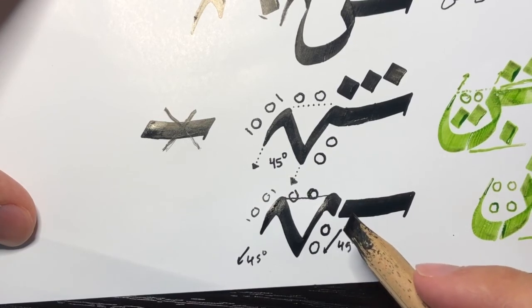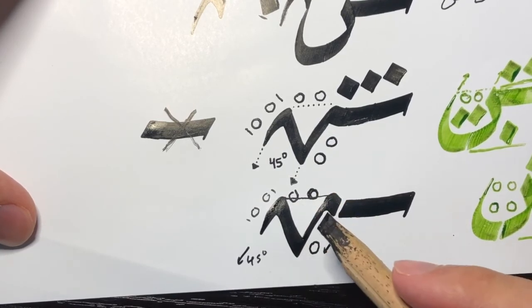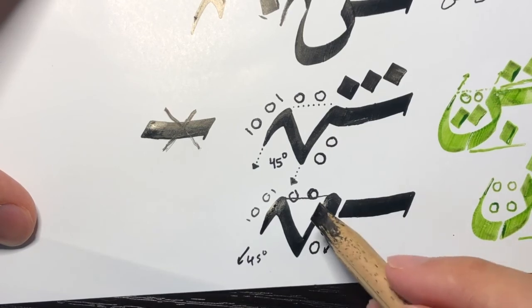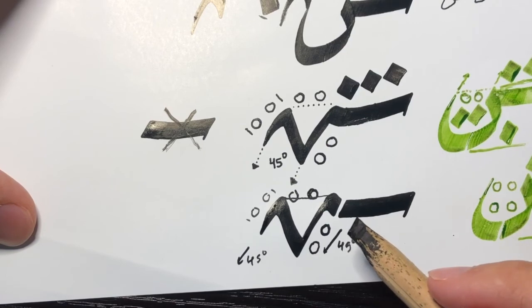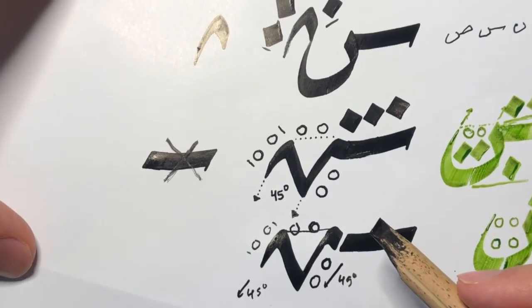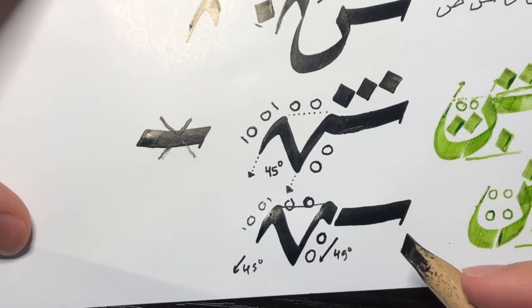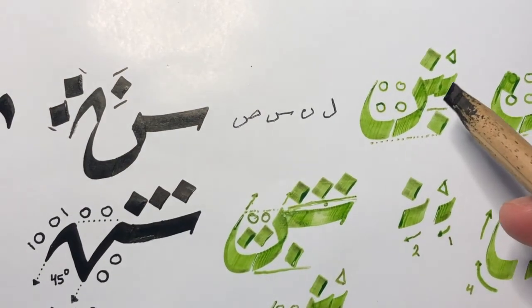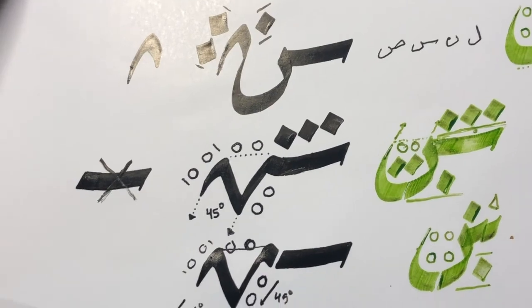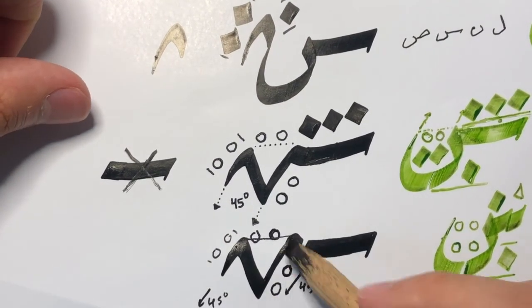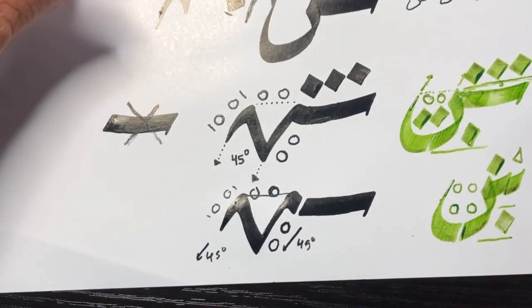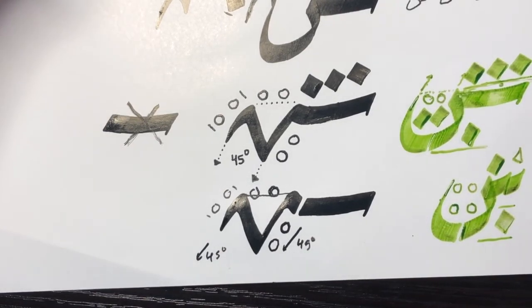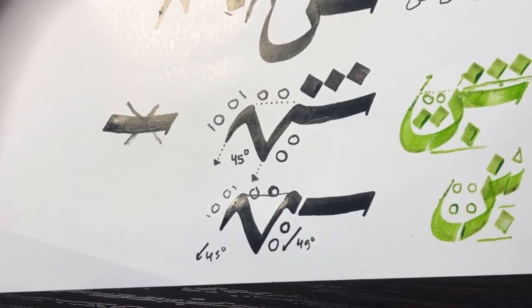At this point, there you have it—that is the tail portion of harf al-shin, and it is the same thing for harf al-daad. So the only new thing you're learning is this portion. This initial portion, the head, is going to be the same for harf al-sein. You can even use the other head, the one with the teeth—that works as well. Just make sure that you have this portion correct and that everything is going as planned. If you have any questions, leave them in the comments. I will see you in another video. Assalamualaikum warahmatullahi ta'ala wabarakatuh.